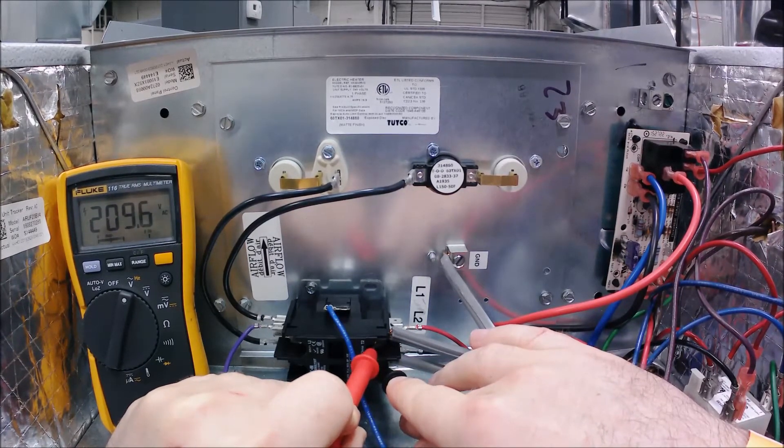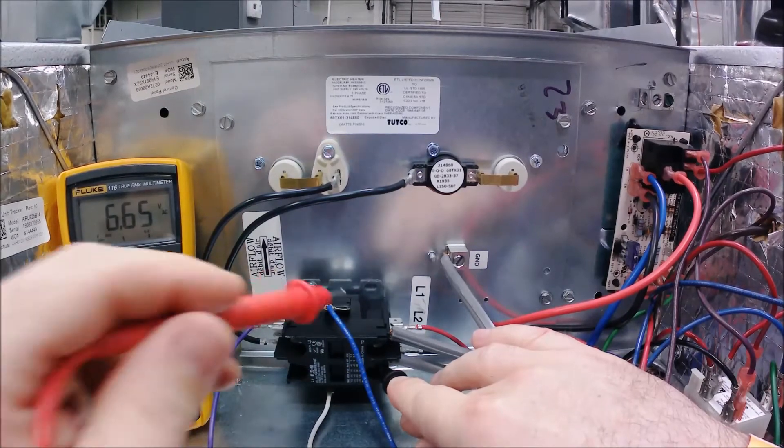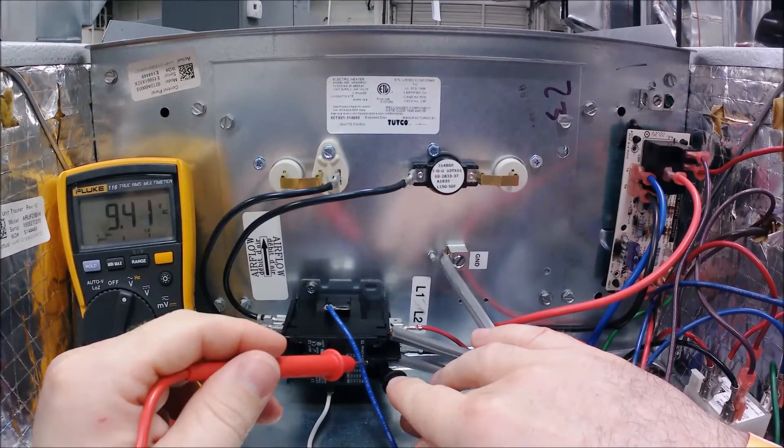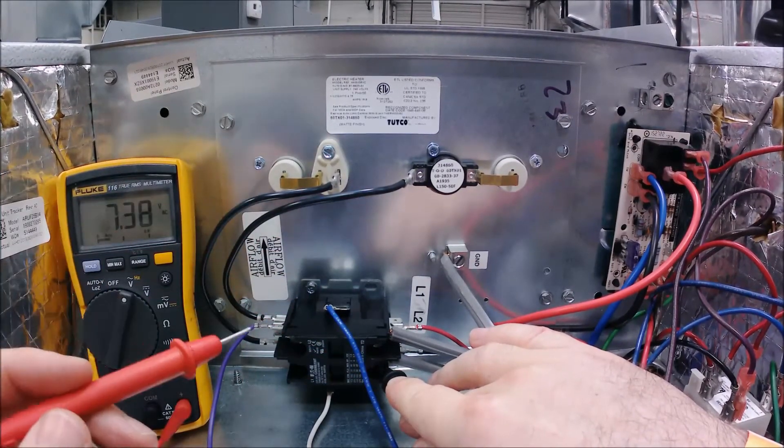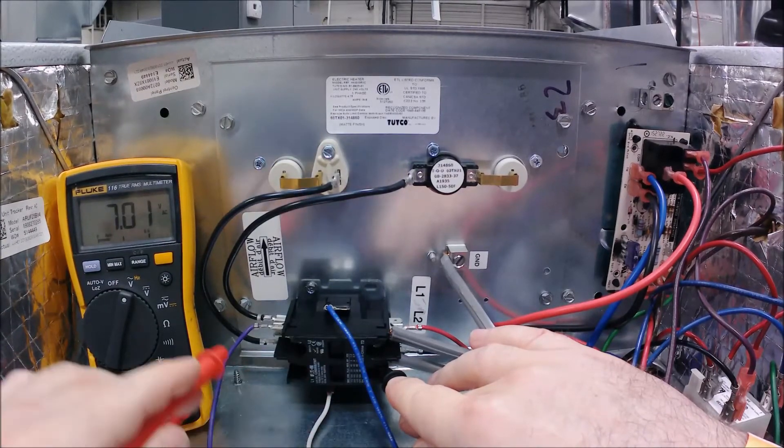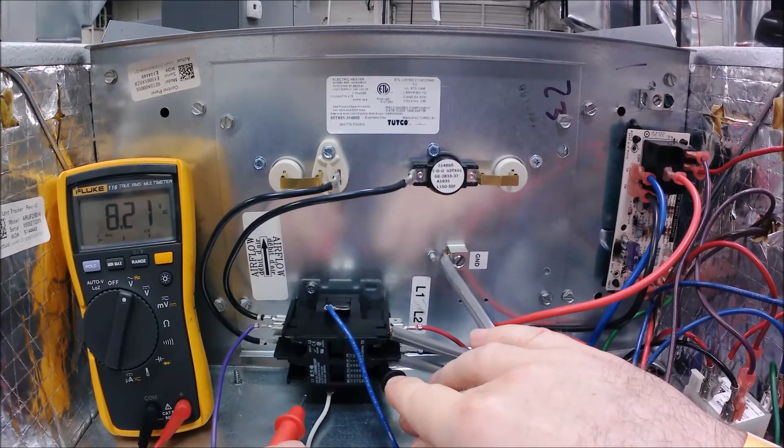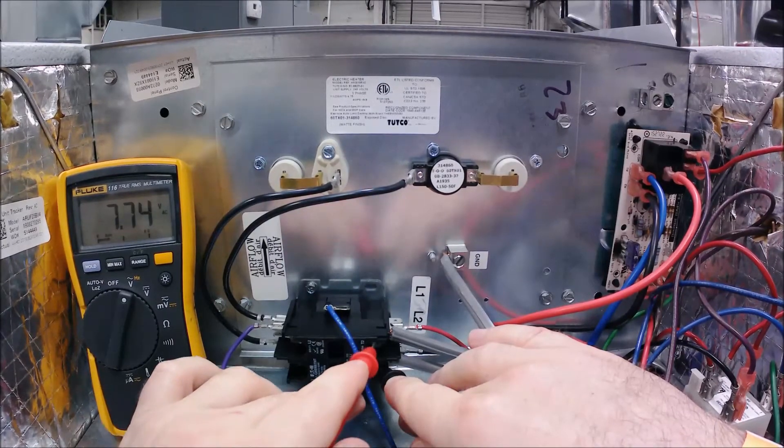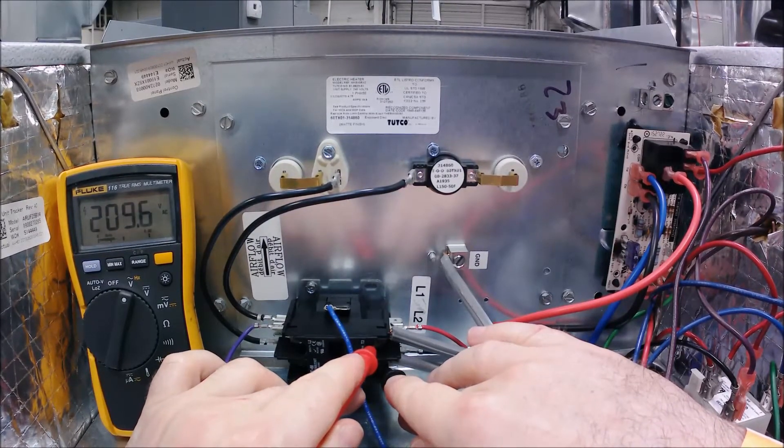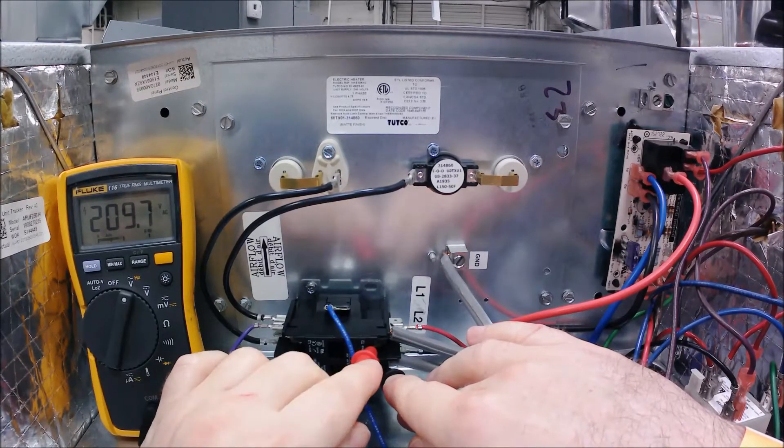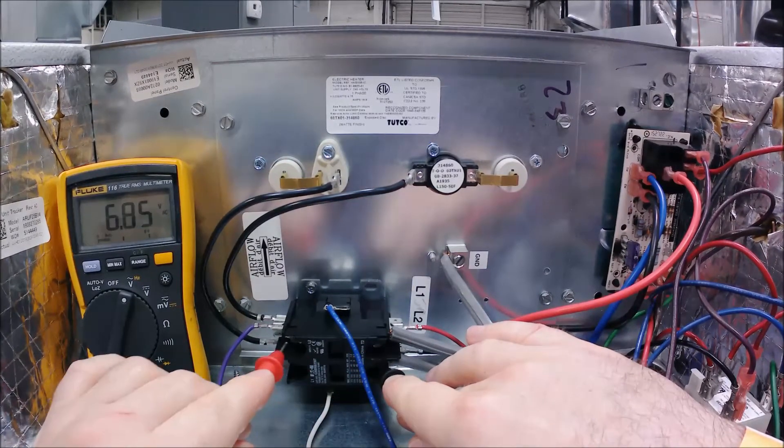With this method of troubleshooting, you leave one lead stationary on the terminal block and the other one you can follow the circuit all the way through. So if my contactor switch was closed but not passing power, I could check power here - I get the full voltage, 210 we'll say - and then I can follow that switch straight across.